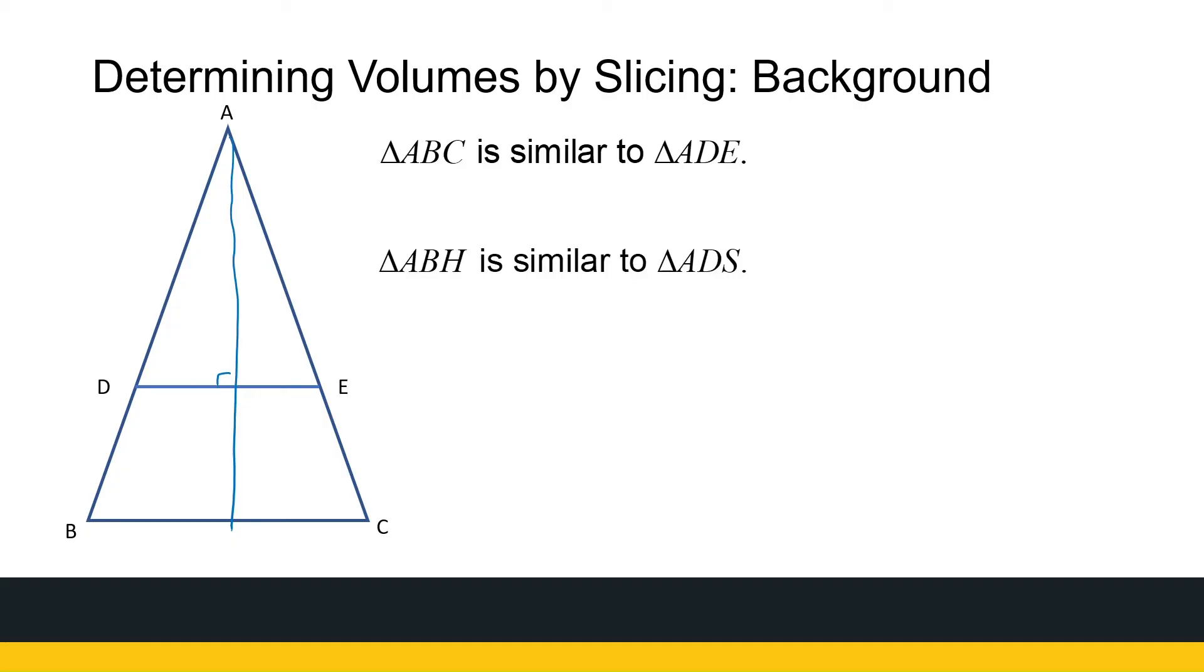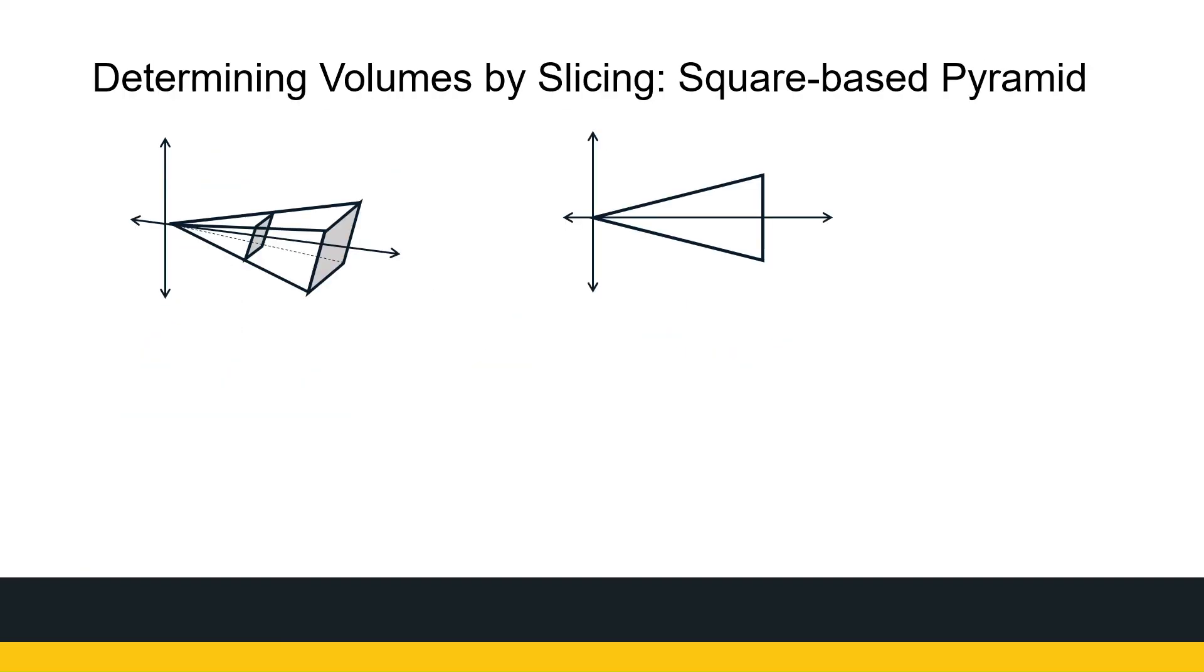Then I know triangle ABC is similar to ADE and ABH is similar to ADS. And that gives us the ratios that AB over AD is equal to AC over AE, which is equal to BC over DE. You might want to pause and just take some time and convince yourself that you're happy with these ratios, because these are what we're going to need when we're trying to find the volume of this square-based pyramid.